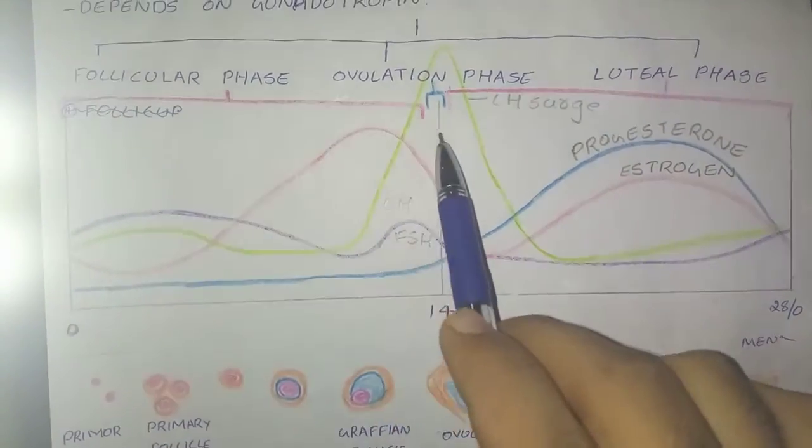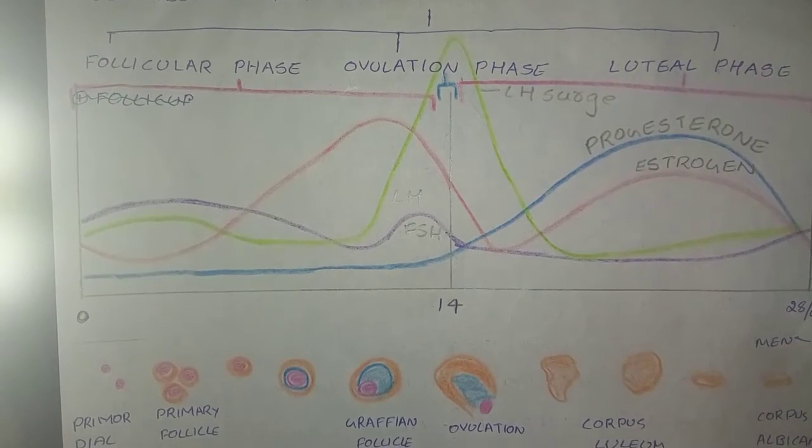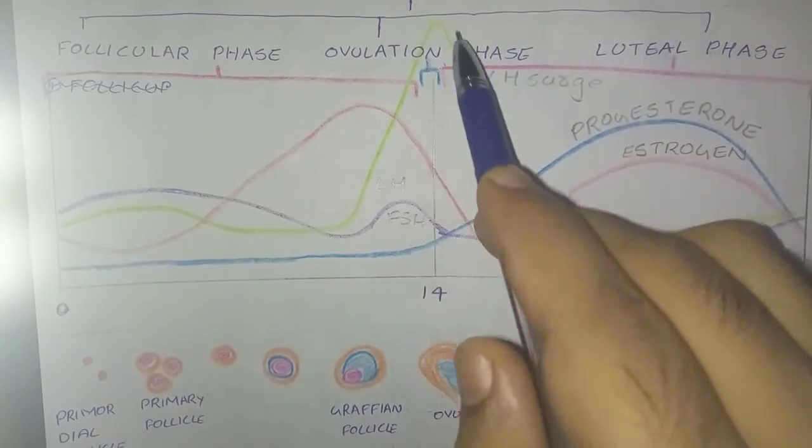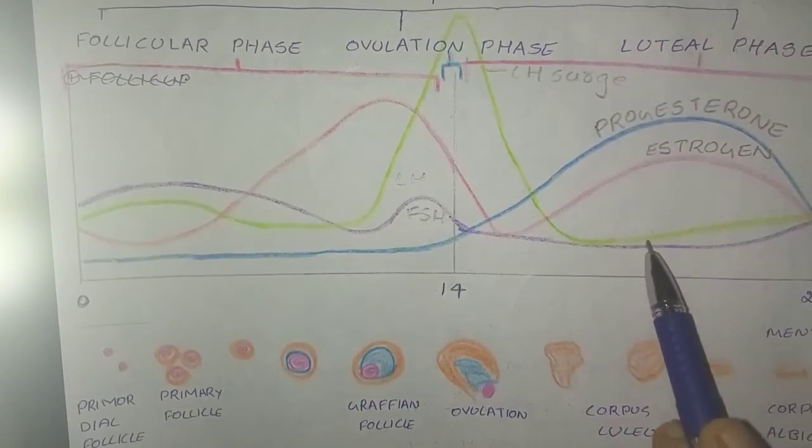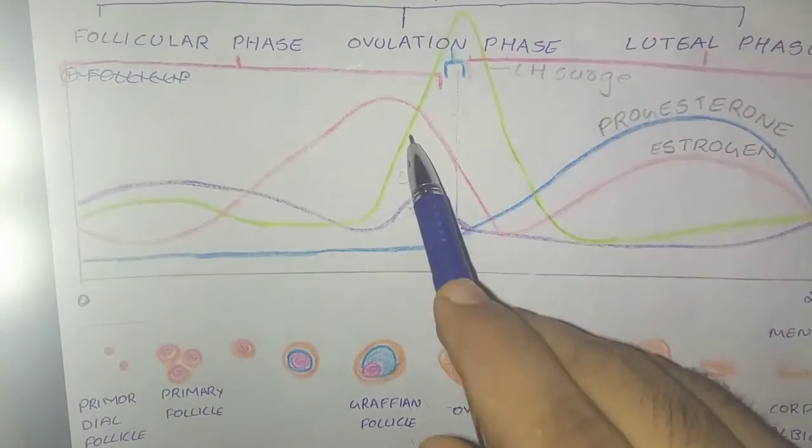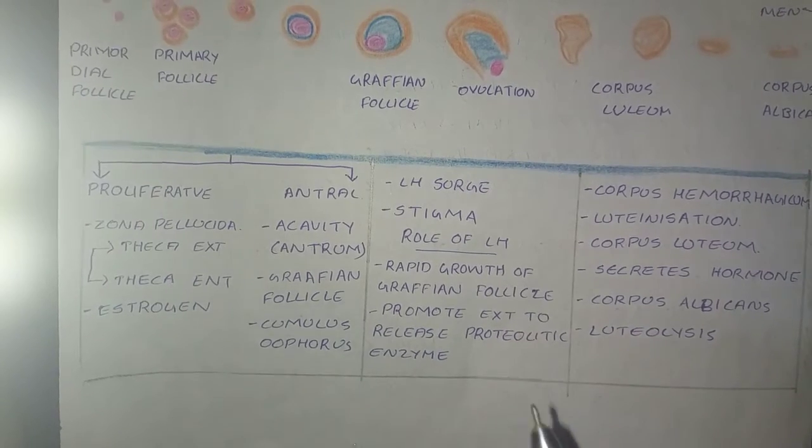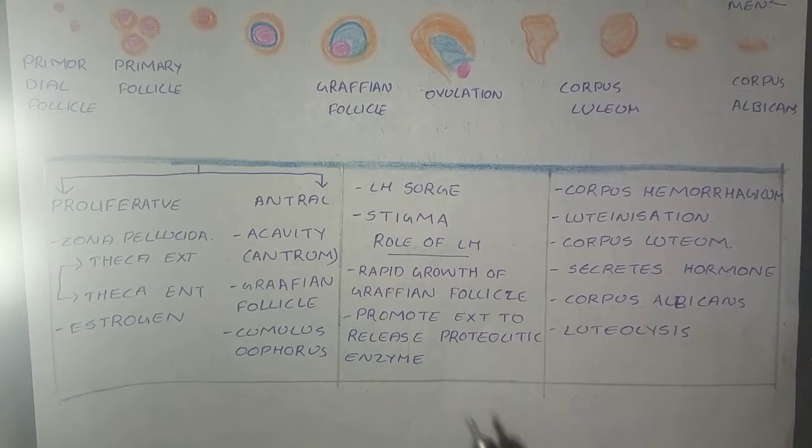This phase has got a property that it has a special process occurring, that is LH surge, which is shown by this green line. This is the graph showing the LH surge. Now a small area on the central part of the capsule protrudes like a nipple and is called stigma toward the outer part of the ovary.